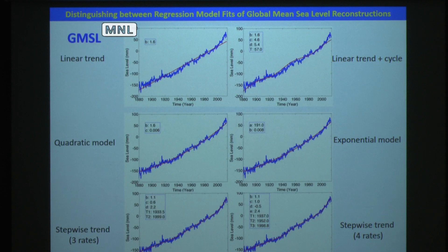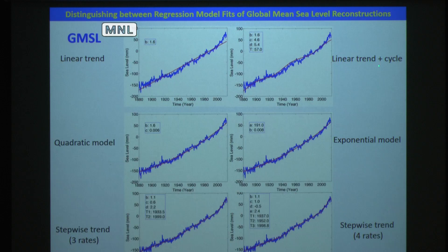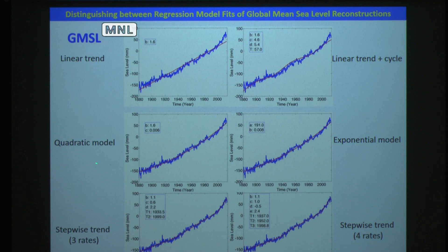This gives us confidence in using it to distinguish regression models of global mean sea level. The global mean sea level reconstruction by Church and White is used in this study, denoted by the blue curve. Six commonly used regression models are shown by the red curves: two non-accelerating models — linear trend, and linear trend plus a harmonic cycle — and four accelerating models: quadratic, exponential, stepwise trend with three rates, and stepwise trend with four rates.